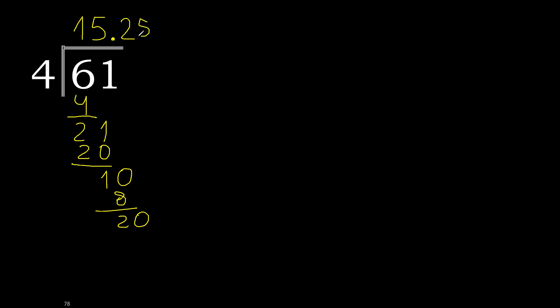4 multiplied by 5 is 20. That is not greater. Subtract: 0. Therefore finish — 61 divided by 4 is 15.25.